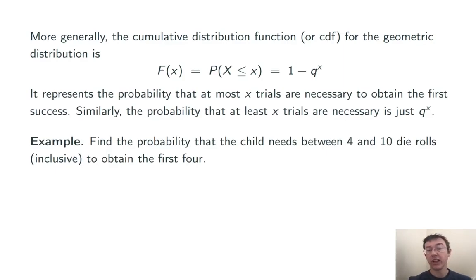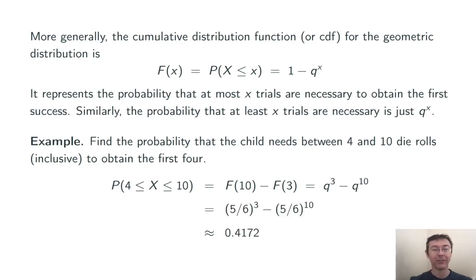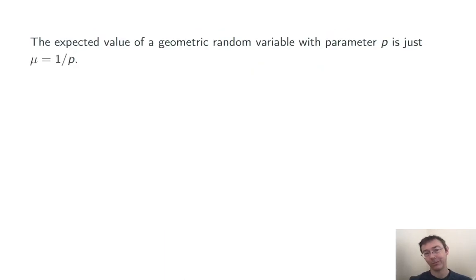Let's do another example. Find the probability that the child needs between 4 and 10 die rolls, including 4 and 10, to obtain the first 4. So we could do that with a summation, like we saw a couple of slides ago. But now we have a quicker way to do this, using that CDF. The probability that x is between 4 and 10 is the probability that x is no more than 10 minus the probability that x is no more than 3. Plugging 10 and 3 into f of x, 1 minus q to the x, and canceling out the 1's, we get q to the 3rd minus q to the 10th. Plugging in q equals 5/6, we get about 41.72%.